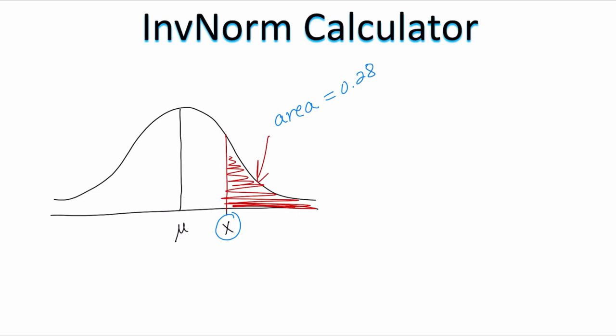Depending on the calculator you're using, you will either have the choice to decide whether you are left-tailed or right-tailed. There are some TI-84s that do not have that option, so getting to know your calculator is very important. If your calculator doesn't ask you whether it's right-tail or left-tail, then most likely it only works left-tail.